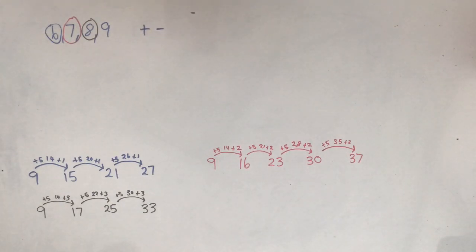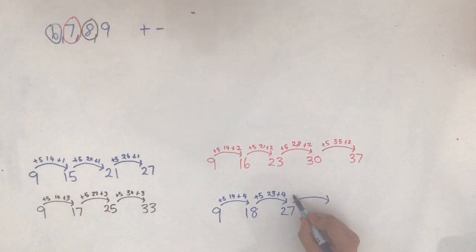And this one actually has a very good pattern that you might notice at the end. I'll do 9 again. 9 add 5 is 14, plus 4 is 18. 18 add 5 is 23, plus 4 is 27. 27 add 5 is 32, add 4 is 36.